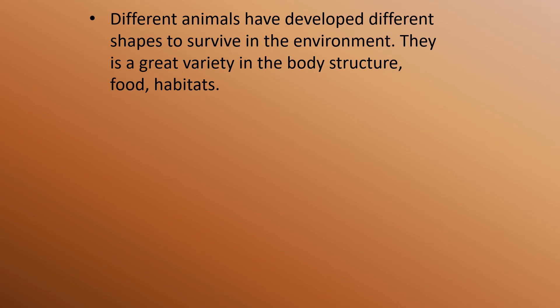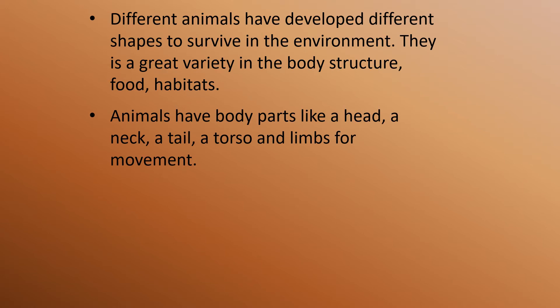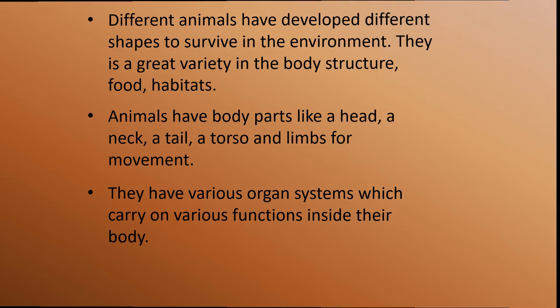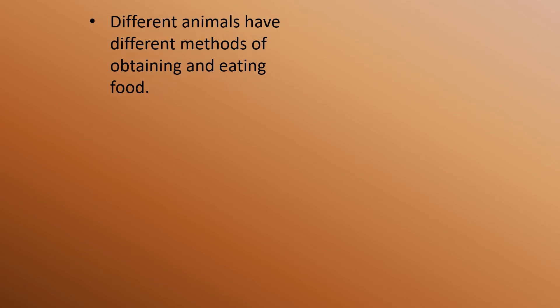Different animals have developed different shapes to survive in the environment. There is a great variety in the body structure and food habits. Animals have body parts like a head, a neck, a tail, toes, and limbs for movement. They have various organ systems which carry on various functions inside their body. Different animals have different methods of obtaining and eating food.